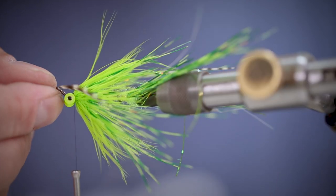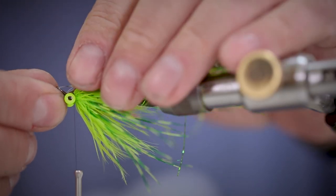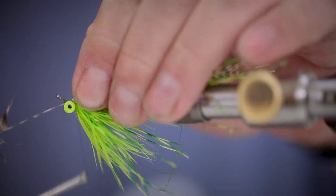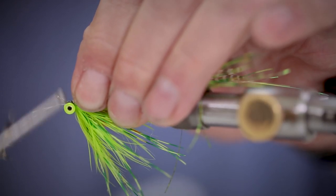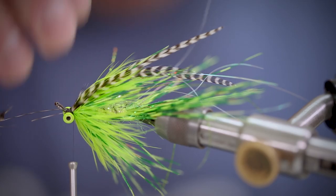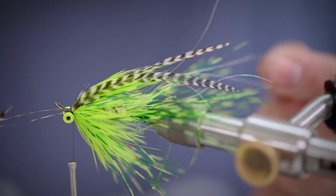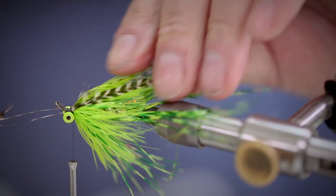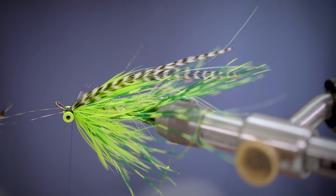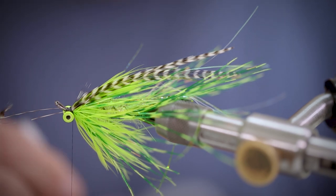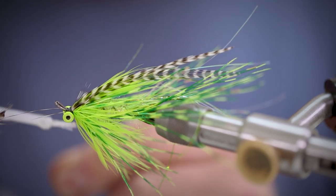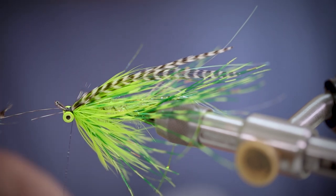Finally we're going to take a couple of our natural grizzle hackles and these are going to run over the top of the fly as our wings. Just trim up any of the flash if you think that they're a little too long. Finally to make sure everything is nice and secure, we're going to add a little bit of super glue to our thread and then wind that in.